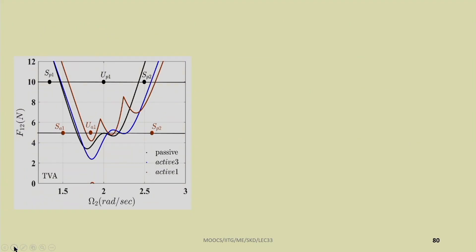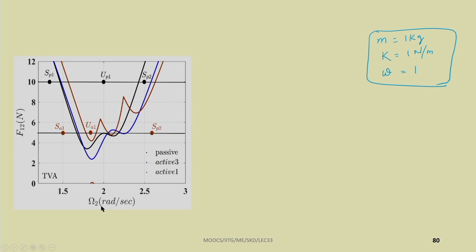You can use Simulink to perform the same analysis. As already seen, the system gives rise to principal parametric excitation, which occurs near the non-dimensional frequency Ω₂ ≈ 2. In the simulation, mass is taken as 1 kg and spring constant k is taken as 1 N/m, giving ω = 1 rad/s.